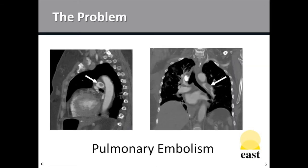The other problem is the dreaded pulmonary embolism. This is certainly the thing we dread the most as trauma surgeons — having a large clot embolize up into the pulmonary vasculature, which can be a fatal event, resulting in cardiovascular compromise for patients we are acutely resuscitating or struggling with in the ICU. It is the leading cause of death for patients that survive over 24 hours.